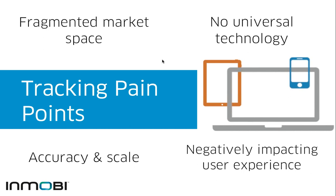Certain technologies give us accuracy, certain give us scale, and getting both accuracy and scale is very challenging. Some technologies negatively affect the user experience. As an ad network, we've been dealing with tracking conversions for the last two to three years. The reason we're investing in tracking is to prove to our advertisers that the campaigns they run on Inmobi have good performance — we can say: you spent this much money, you got this many conversions, we delivered good performance. We also use conversion tracking to optimize performance, not just prove it.